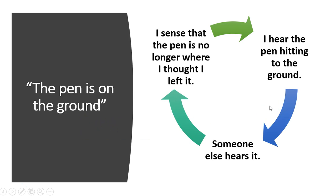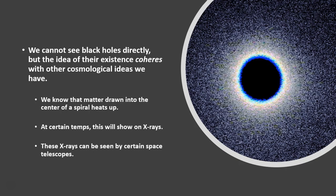Here's a slightly better example. We say it's the case that there are black holes out in space. We can't see black holes directly, but the idea of their existence coheres with other cosmological ideas that we have. We know that matter drawn into the center of a spiral heats up, and at certain temperatures this shows on X-rays that can be seen by space telescopes. So we theorize that there are things called black holes, and that the sentence 'there are black holes' is true — but it's true in a coherence sense of truth as opposed to a correspondence sense.